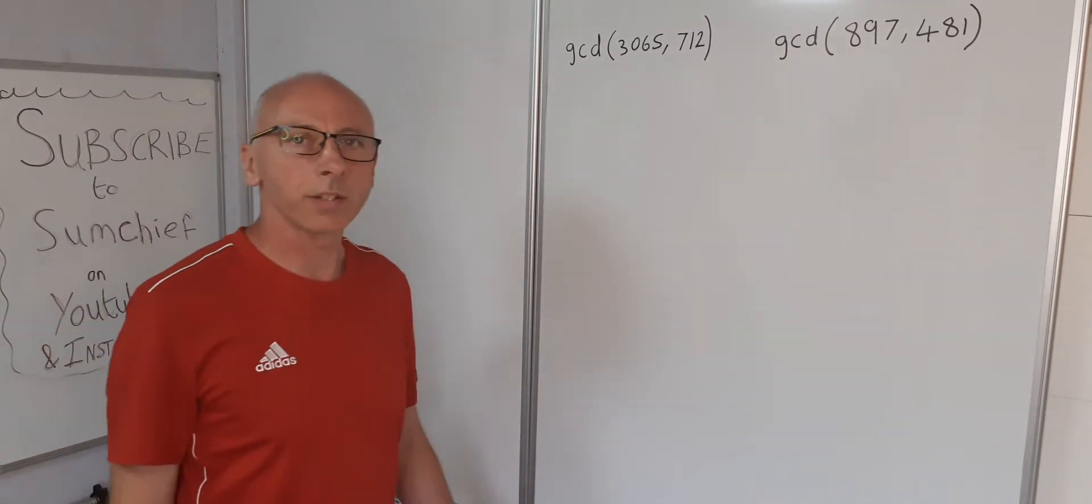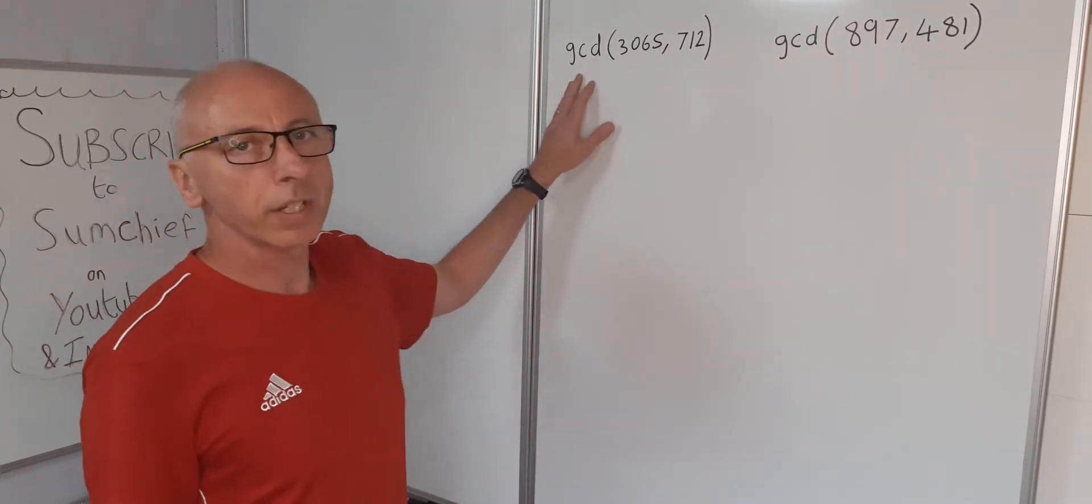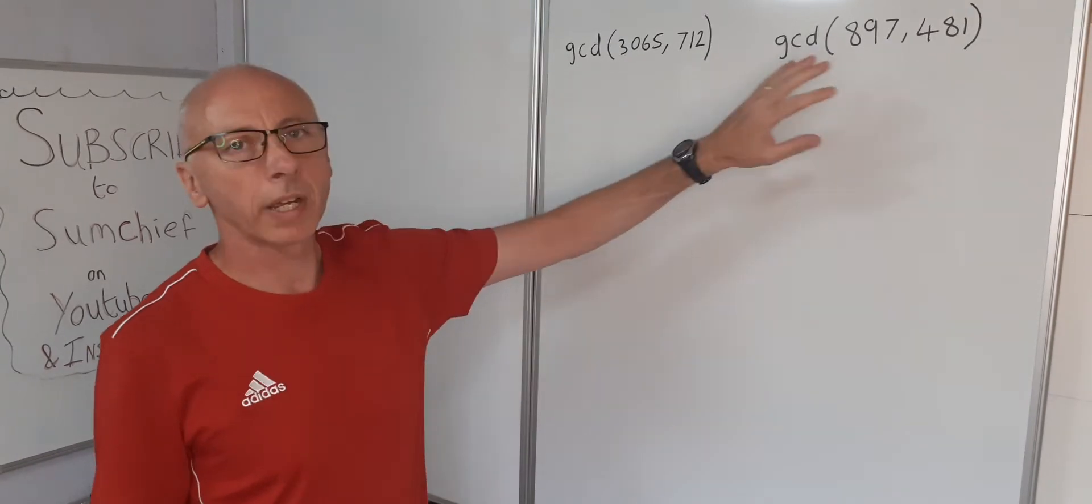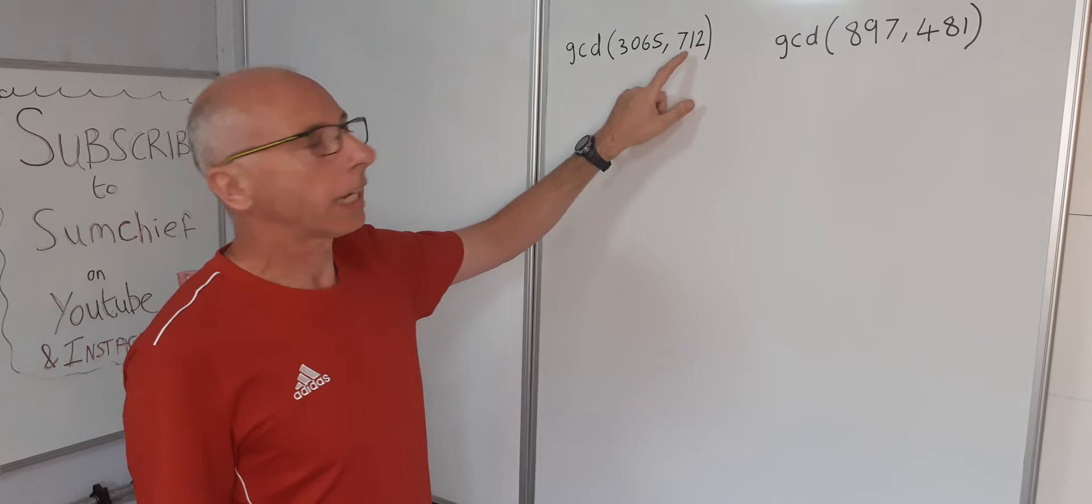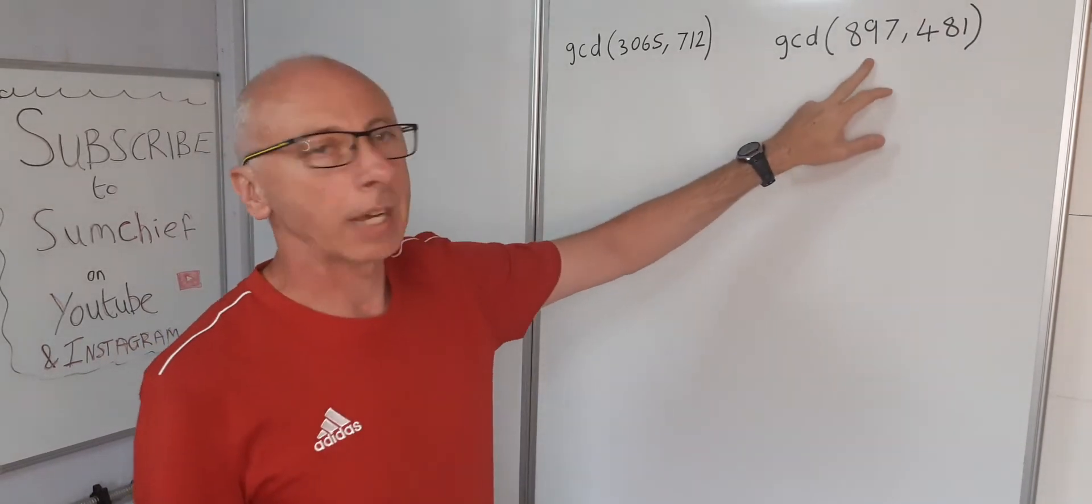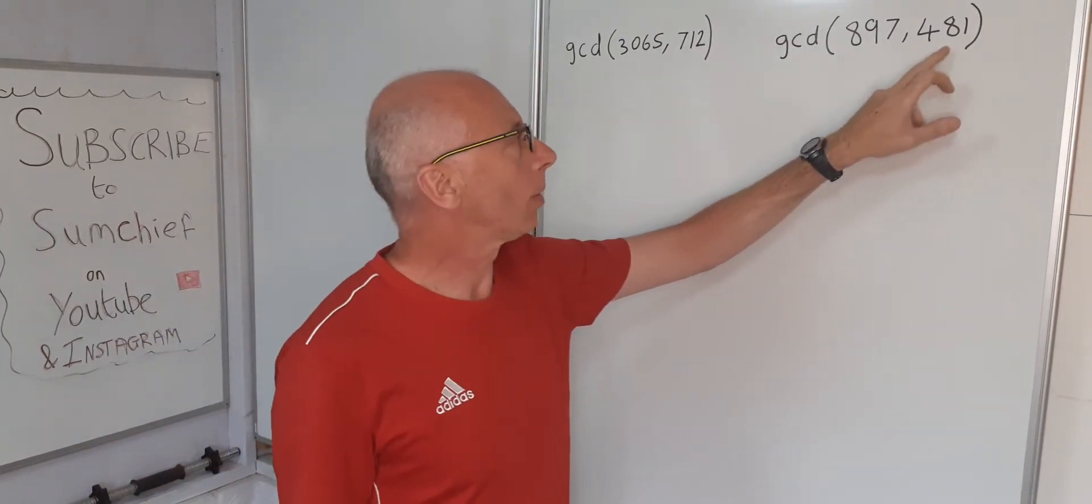Okay, so we're going to use Euclid's algorithm to find the greatest common divisors of these two pairs of numbers. The first one is 3065 and 712, and then after that we're going to go with 897 and 481.